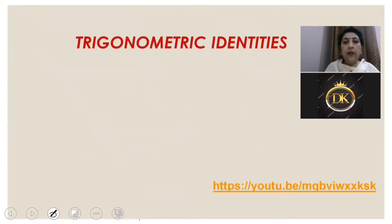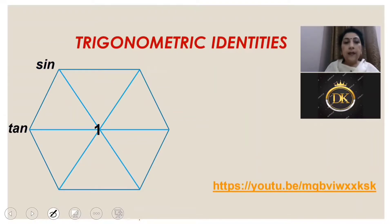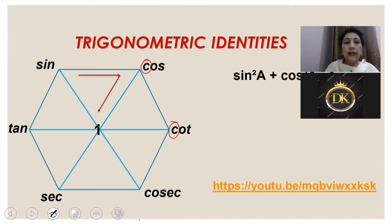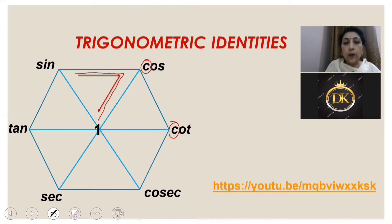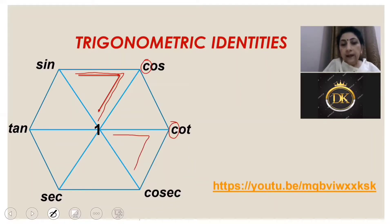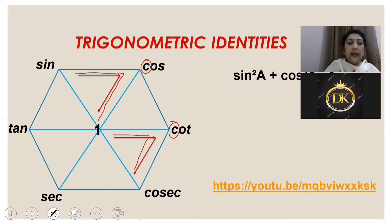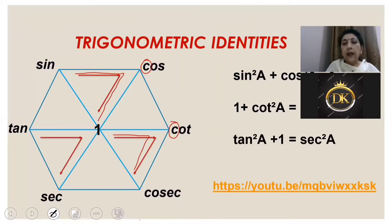Then we are left with identities. Easily we can derive them also. Take the topmost triangle in the hexagon — going in order: sin, cos, one — and I get sin²A + cos²A = 1. Take the alternate triangle: one + cot²θ = cosec²θ. And the third alternate triangle gives tan²A + 1 = sec²A. These are all the important formulae.